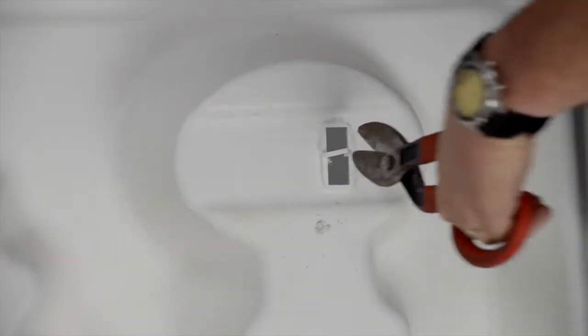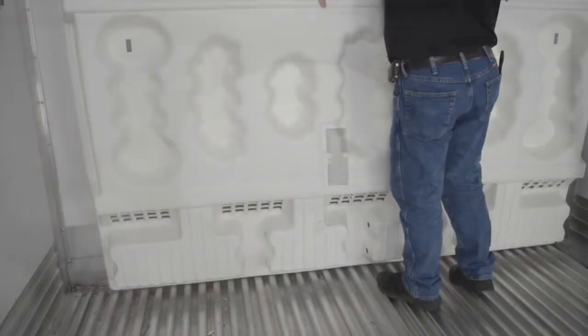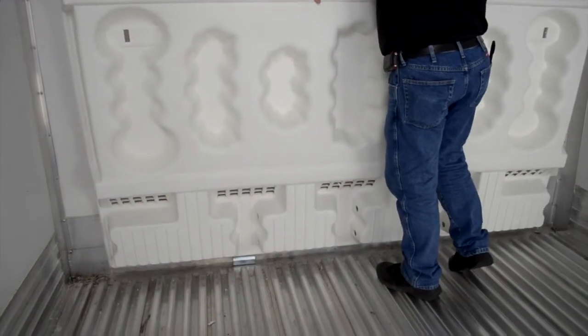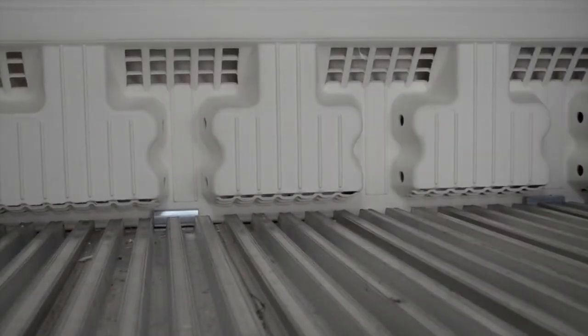Locate the two cutouts on the bottom section and cut away the tabs. Place the lower bulkhead section into the two bulkhead support brackets and position the bulkhead against the front wall of the trailer.